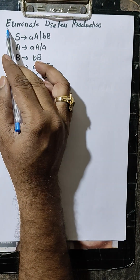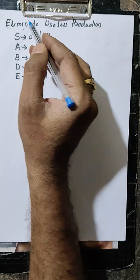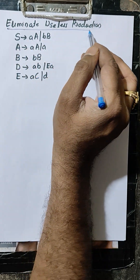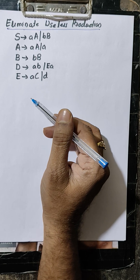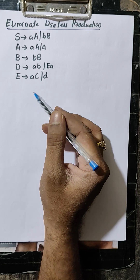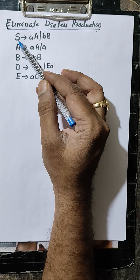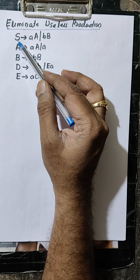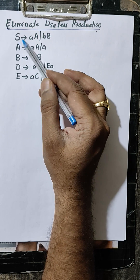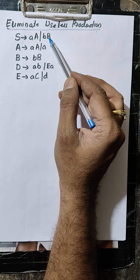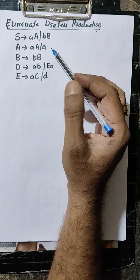In this example, eliminate useless production means we have to eliminate useless production from the grammar. How to identify useless production? Useless productions are those productions which are not reachable from the starting state, means from this you cannot reach to that production, and which are not terminate.